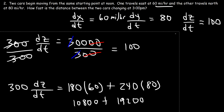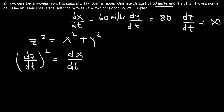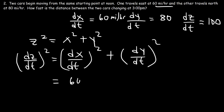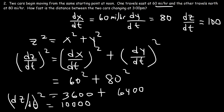There's a simpler way to get the same answer without drawing pictures. Just as z squared equals x squared plus y squared, for this type of problem, dz/dt squared equals dx/dt squared plus dy/dt squared. So dx/dt is 60, dy/dt is 80: 60 squared is 3,600 and 80 squared is 6,400. Adding those gives 10,000, so dz/dt squared equals 10,000, and the square root of 10,000 is 100. So dz/dt equals 100 miles per hour — a much simpler approach.